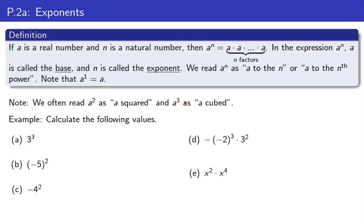So, let's calculate a few values. 3 to the 3rd is 3 times 3 times 3, which is 27. Negative 5 squared is negative 5 times negative 5, which is 25.